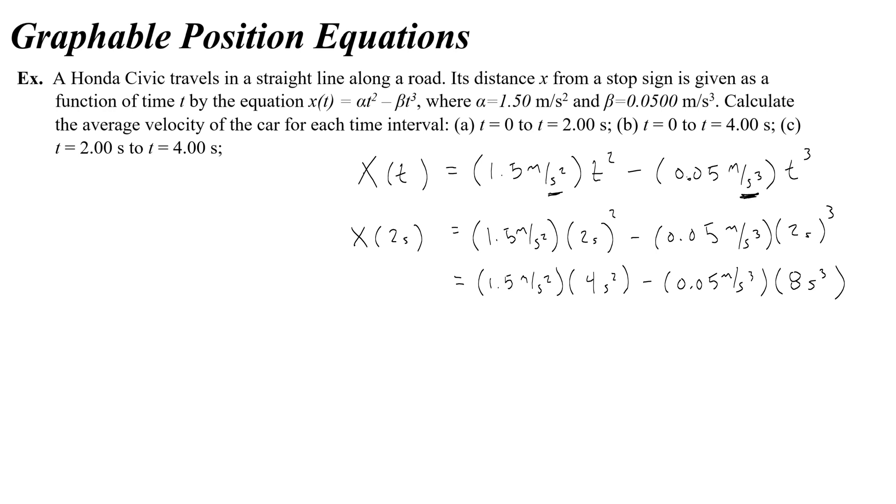It's so that when I multiply 0.05 by eight the seconds cubed cancel and I'm left with meters because that's what I want in my position equation. The same here, the second squared cancel leaving me with just meters which is what I want in my equation. And so at two seconds this ends up being 5.6 meters.